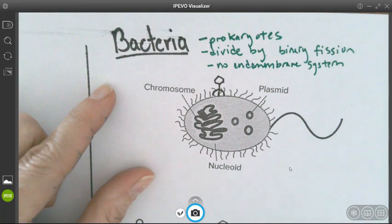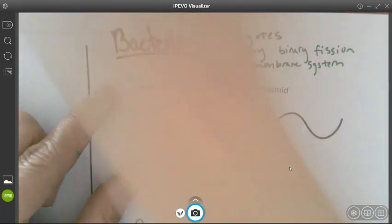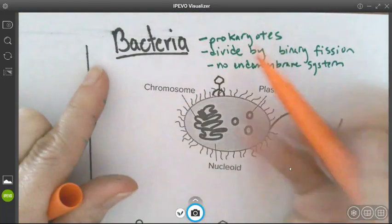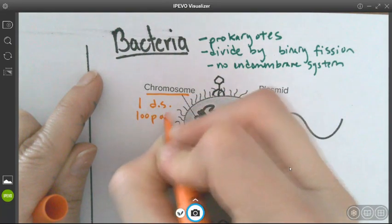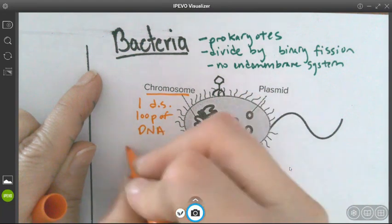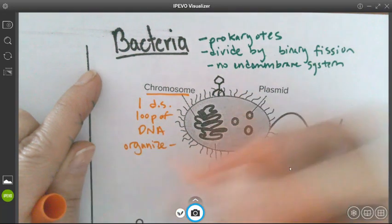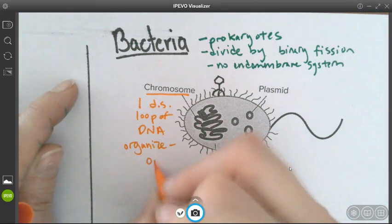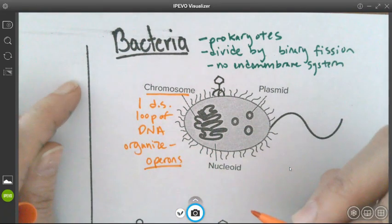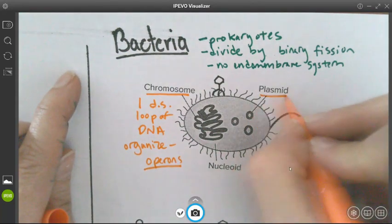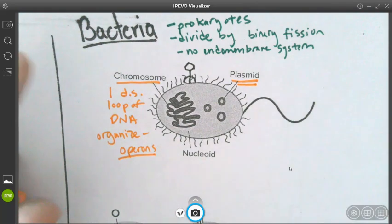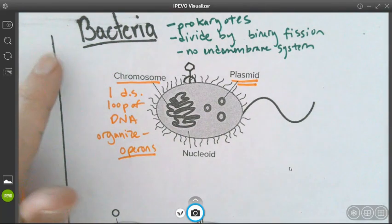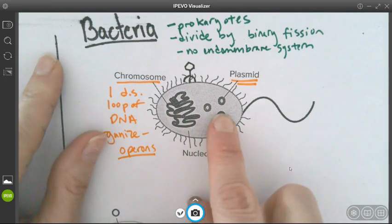So we know that bacteria have one large circular chromosome. It's one loop of DNA here. It is double-stranded. So one double-stranded loop of DNA. And they organize their DNA in related sections of genes called operons. We've learned about this, right? And sometimes they also have plasmids. Plasmids are small circular molecules of DNA often taken up from the environment and they're extra chromosomal. They're separate from the chromosome.